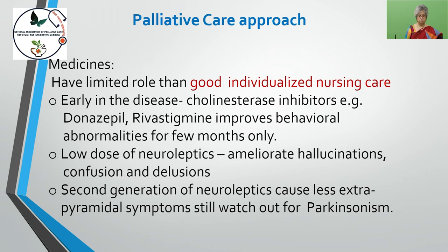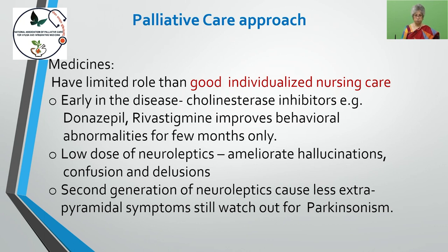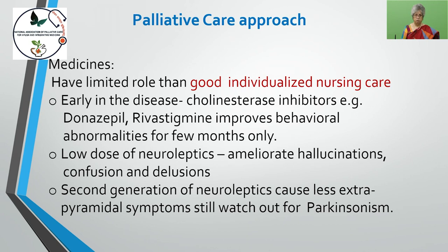In the early stage of disease, you can give donepezil or rivastigmine, which improve behavioural abnormality for a few months only. Low doses of neuroleptics help ameliorate hallucination, confusion, and delusion. Second-generation neuroleptics cause less extrapyramidal symptoms, but still watch out for Parkinsonism. So there is a very limited role for medicine only in the initial stage.